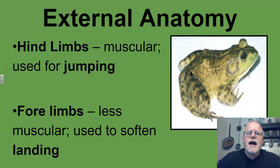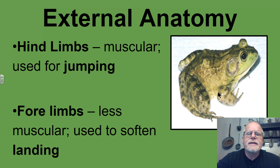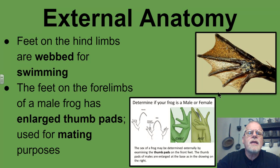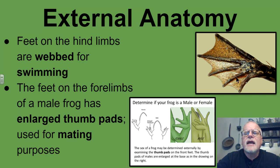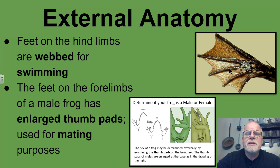If we take a look at the hind limbs here, you can see they are quite muscular and these are used for jumping. The forelimbs are much shorter, less muscular, and they are used to soften the landing. If we take a look at the feet on the hind limbs, you'll see that they are webbed, because these are aquatic frogs and they would spend some time swimming. This is almost like the flipper that you would use in a swimming pool.